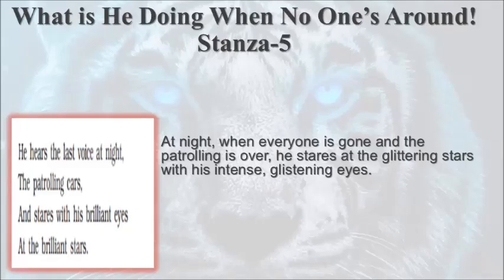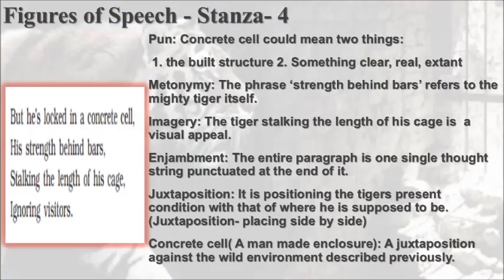In stanza 5, he paints a verbal picture of the tiger looking longingly at the bright glittering stars from his confinement, with his equally sparkling eyes. This is the time to introduce the poetic devices in stanzas 4 and 5 that we have dealt with in this module.